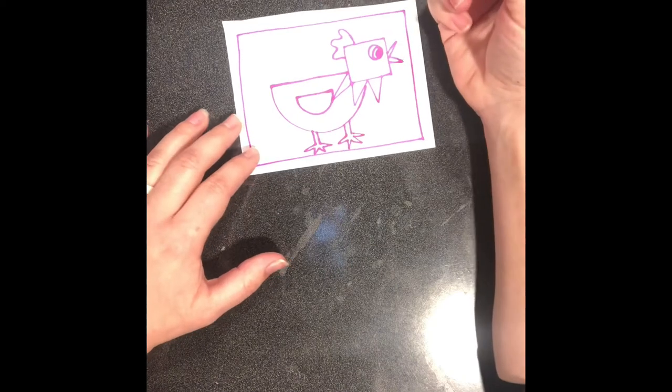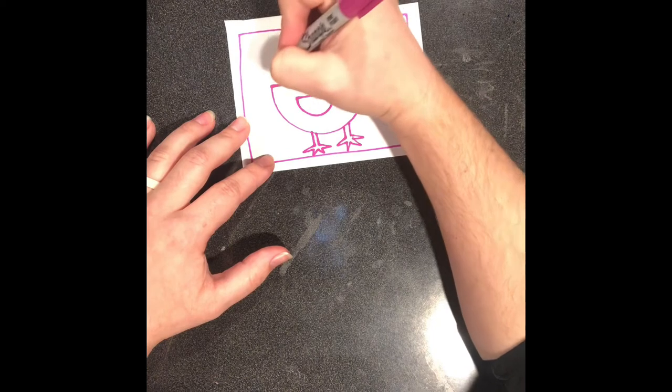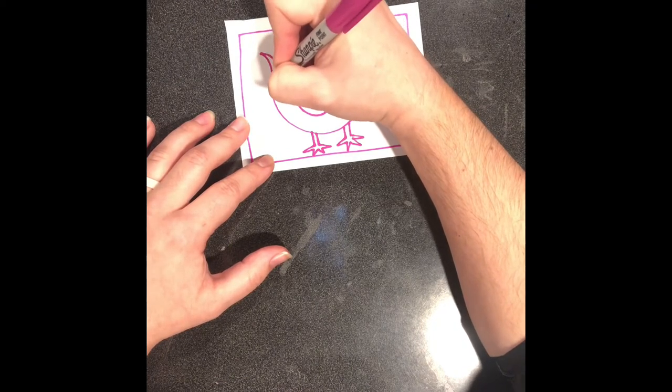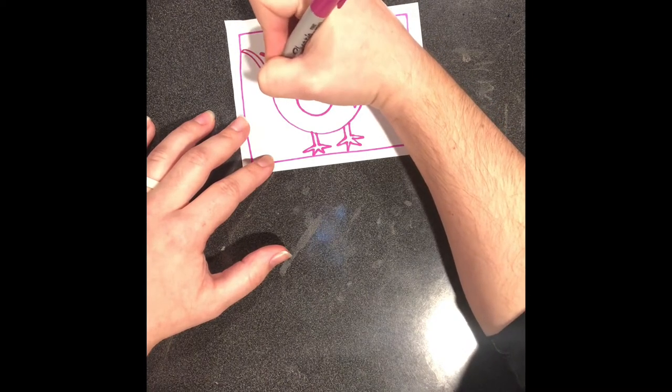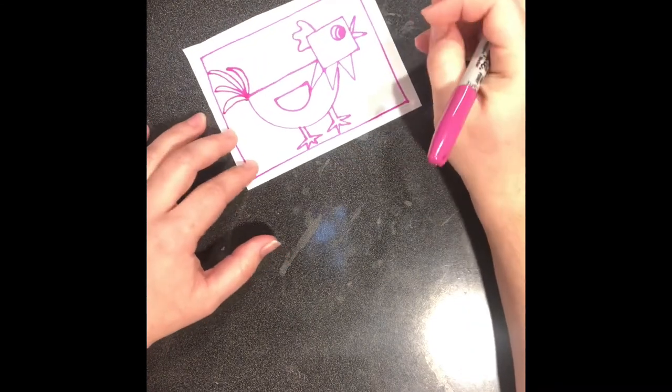And the last thing we need for our bird is tail feathers. So I'm going to come back to this back corner of my half circle. And I'm going to curve up, stop, curve back down. It's going to end up looking like a bunch of bananas grouped together there. You can have as many tail feathers as you'd like.